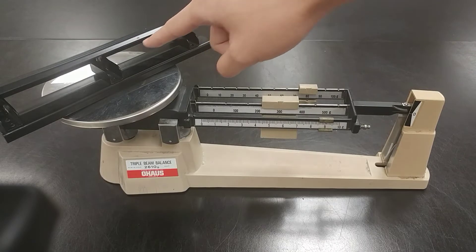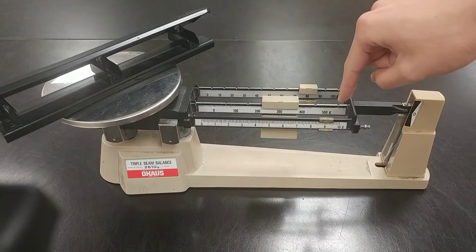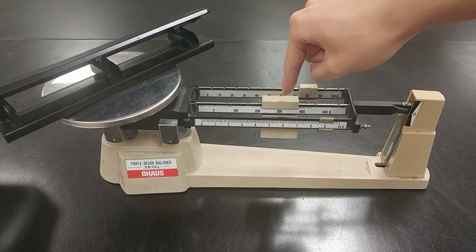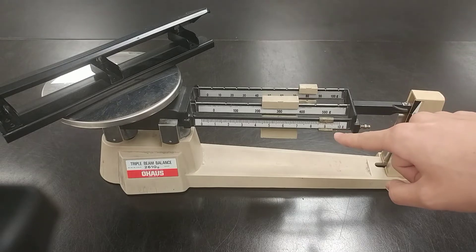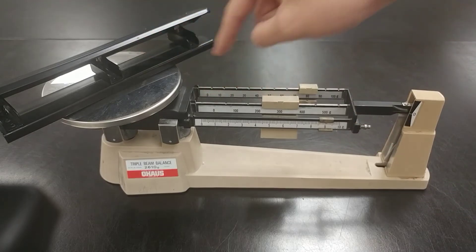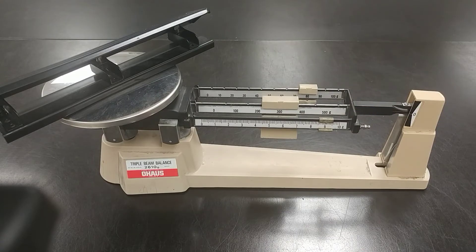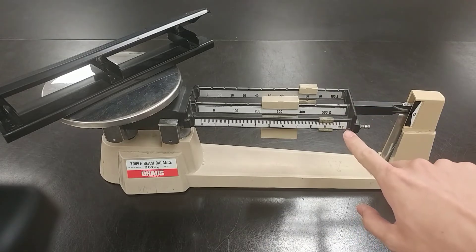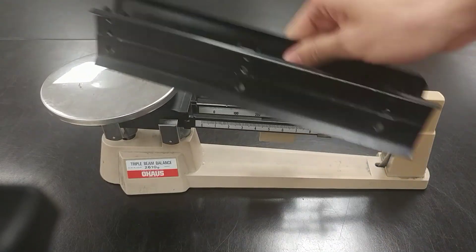To find the mass of this hole puncher, we need to add these three weights together. The biggest one is at 300, the medium one is at 80, and the smallest one is around 9. So the mass is 300 plus 80 plus 9, which is 389. G stands for grams, so it is 389 grams.